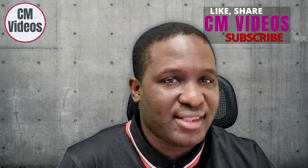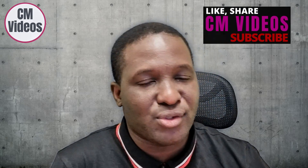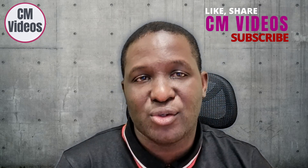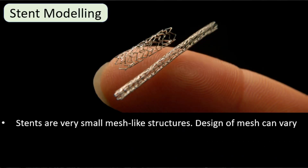If you are interested in the kind of content we're talking about today, please subscribe to this channel. Stents are essentially very small mesh-like structures, as shown in this picture, and you can see the size of the stents in comparison to a human finger. Their designs can vary, and depending on the design, you have different behavior associated with the stents.